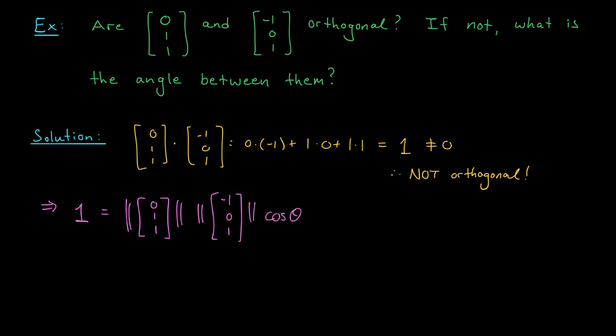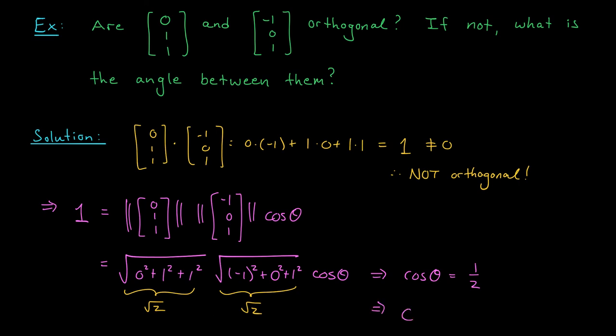Well, what are these norms? The norm of my first vector is the square root of 0 squared plus 1 squared plus 1 squared. That's root 2. The norm of my second vector is the square root of minus 1 squared plus 0 squared plus 1 squared. That's, again, root 2. And then we have cos theta. Well, if you simplify this, you get that cos theta is a half. Using some trigonometry, you'll find that theta is pi over 3. The vectors meet at a 60-degree angle.